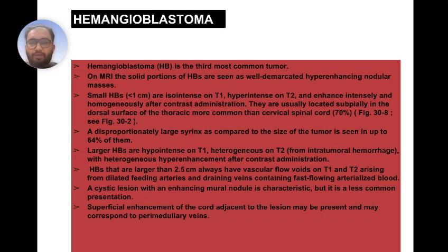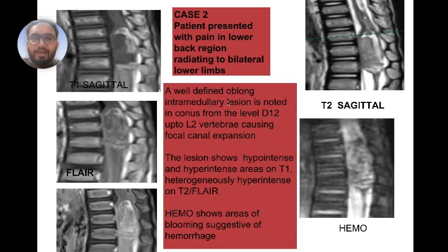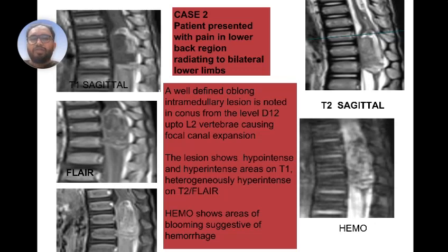Superficial enhancement of the cord adjacent to the lesion may be present and may correspond to a perimedullary lesion. Case 2: A patient presented with pain in the lower back region radiating to the lower limbs. A well-defined oblong intramedullary lesion is noted in the conus from D12 up to L2 vertebral level, causing focal canal stenosis. The lesion shows hyper-intense and hypo-intense areas on T1-weighted images, is heterogeneously hyper-intense on T2 and FLAIR images, and hemosequential imaging shows blooming, suggestive of hemorrhage.